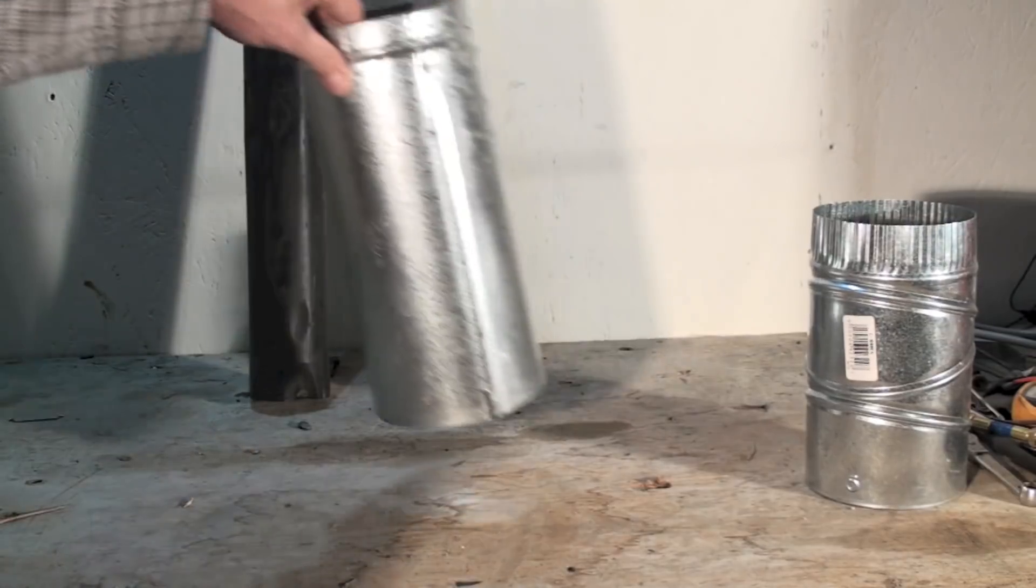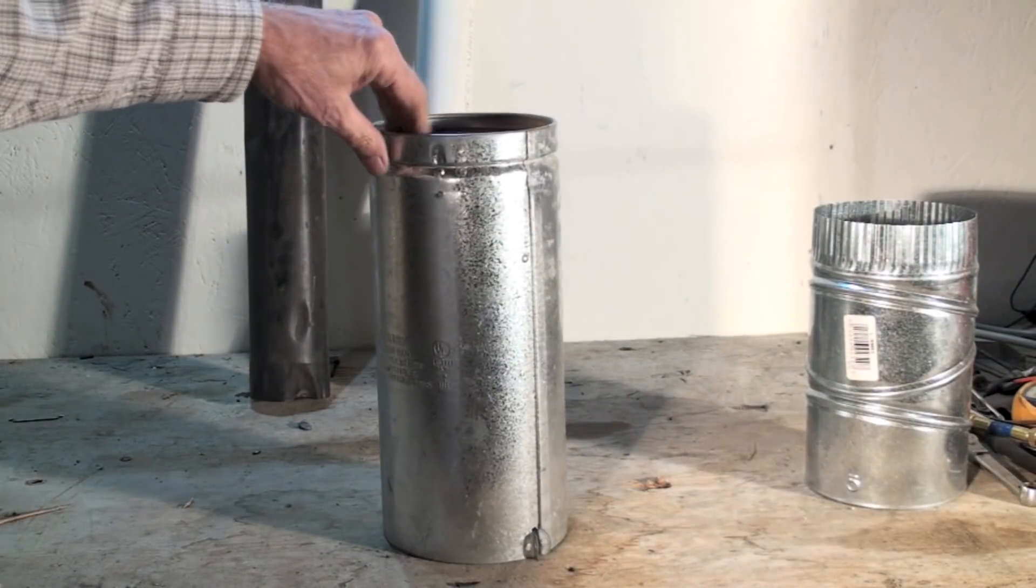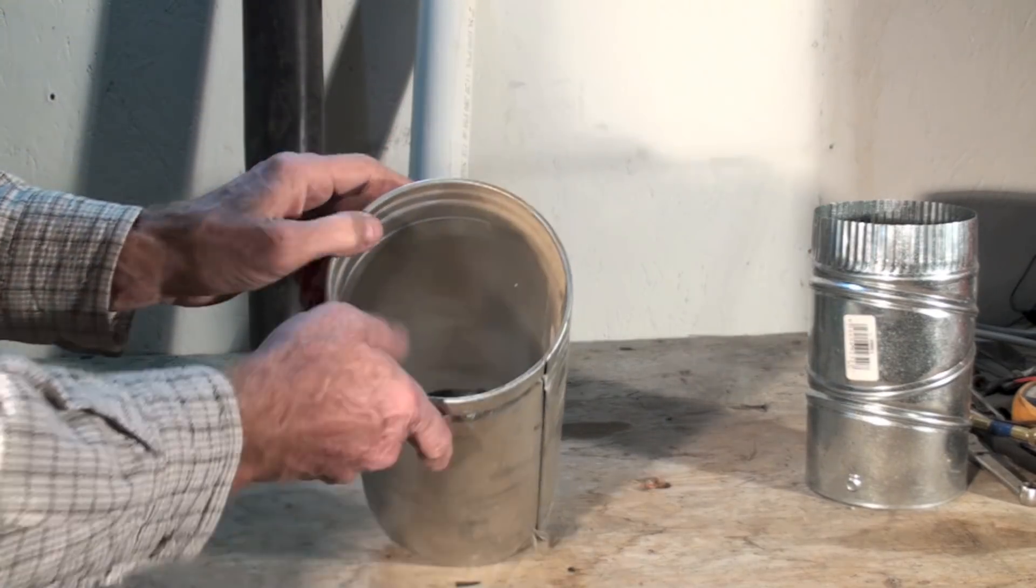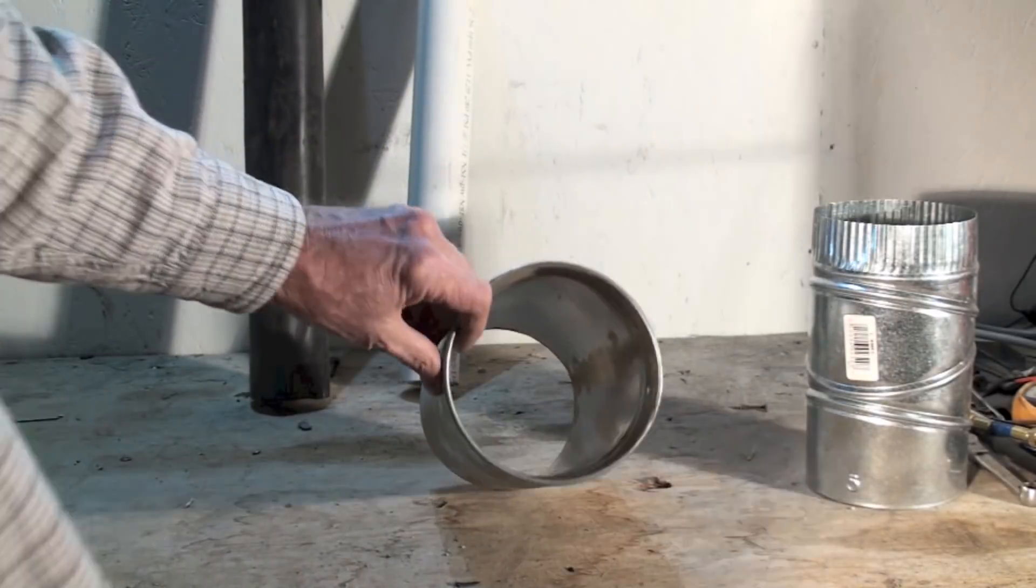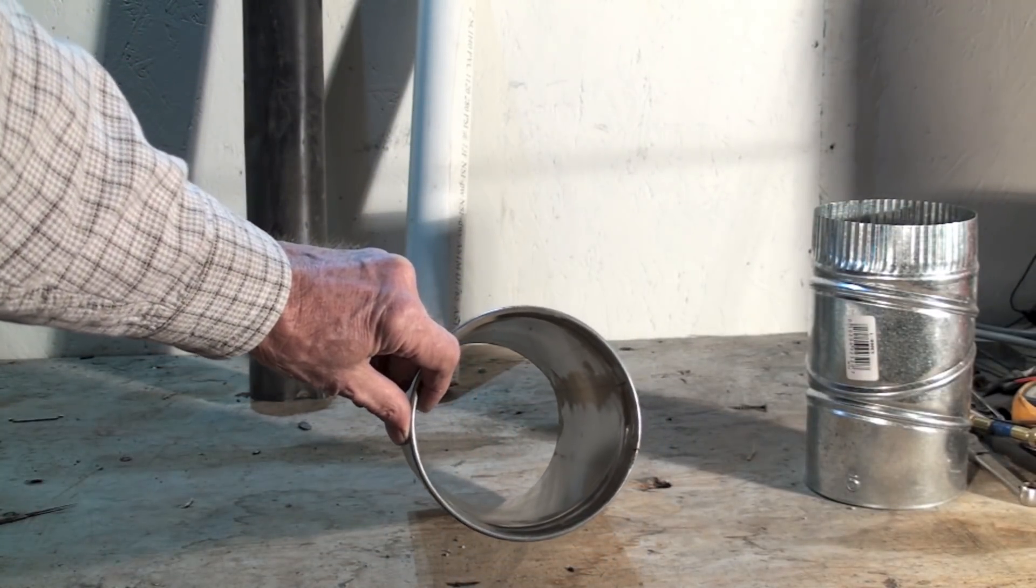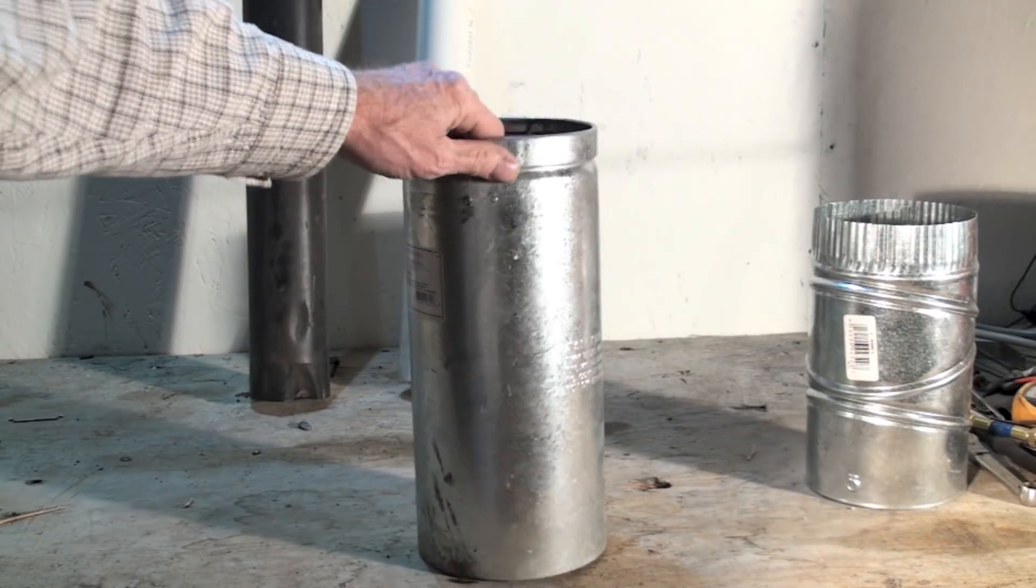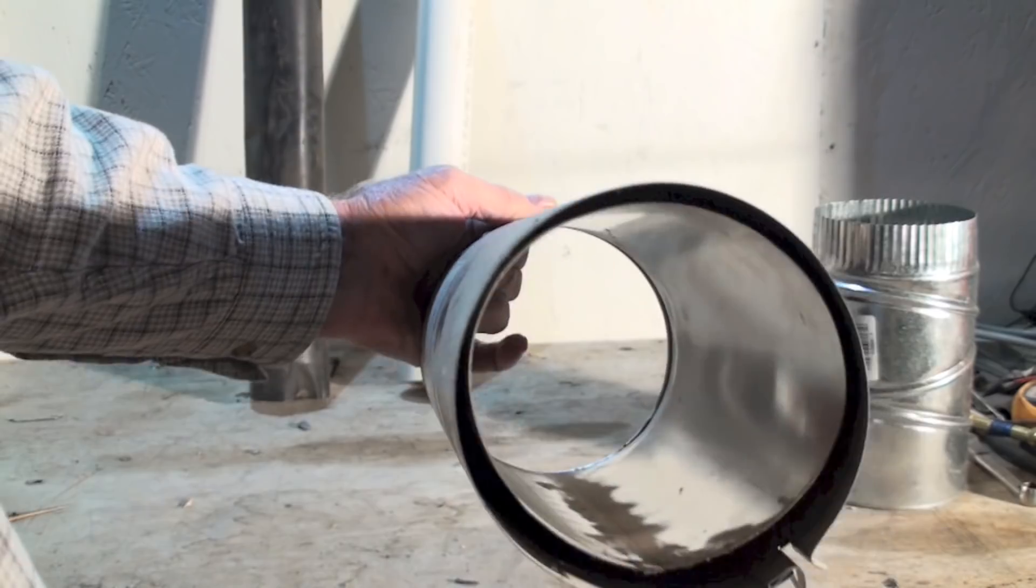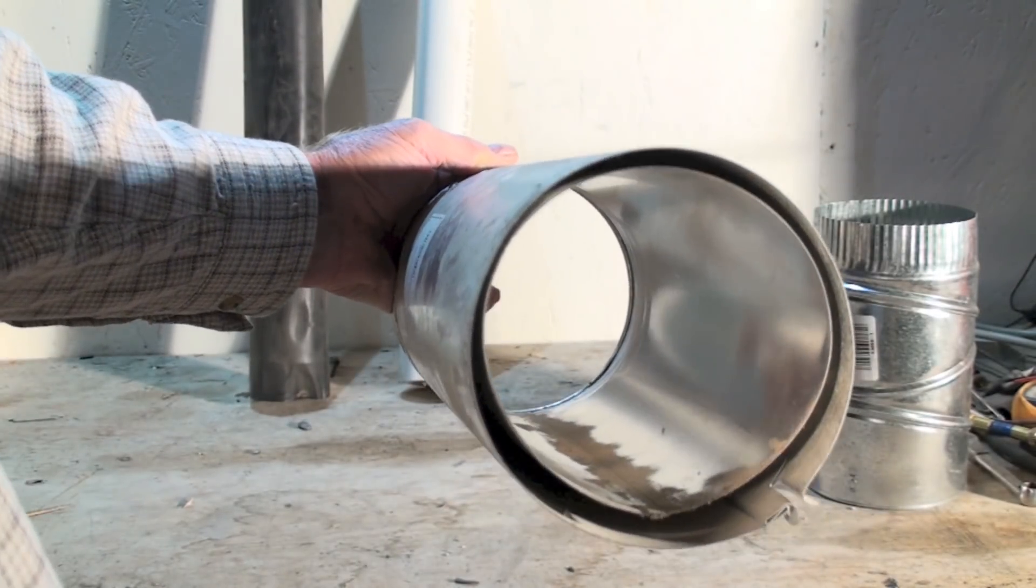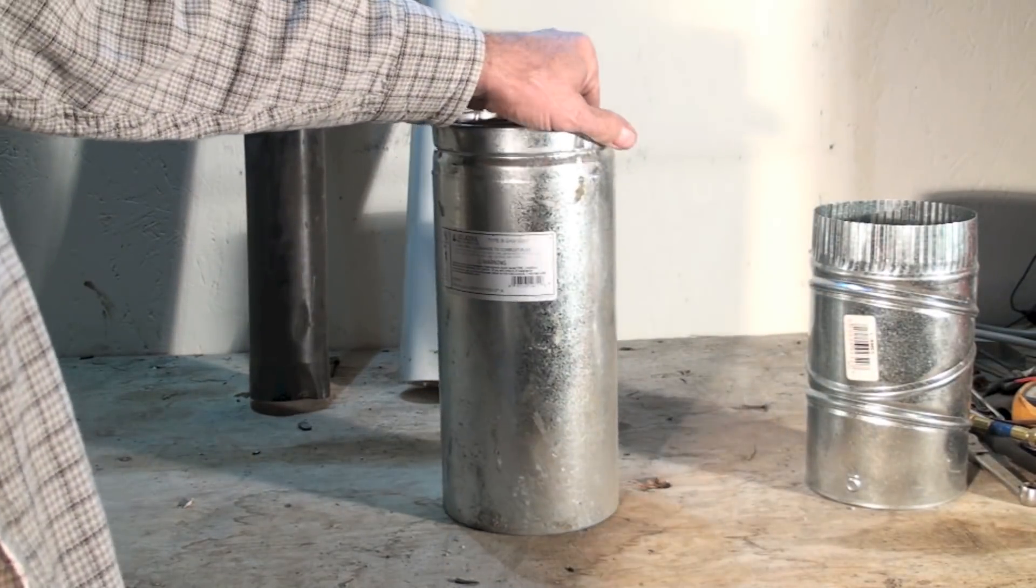We started using this stuff here a number of years ago. This is B-Vent. Now if you look inside it, you can see there's an aluminum liner inside, and it's galvanized outside. There's a space between the galvanized and the aluminum. This is called B-Vent.